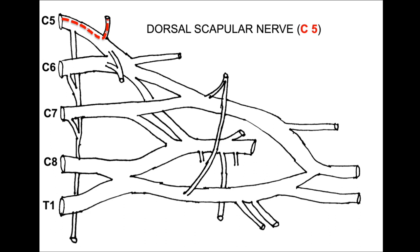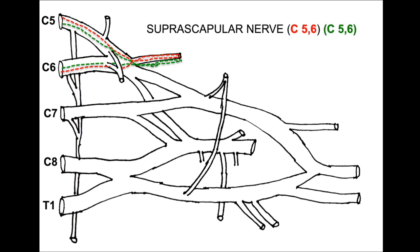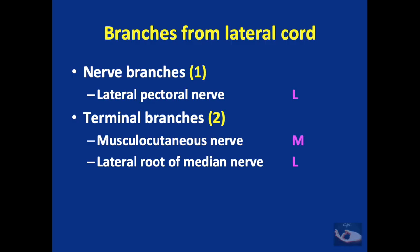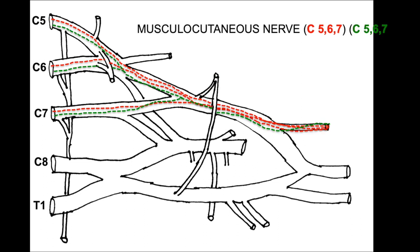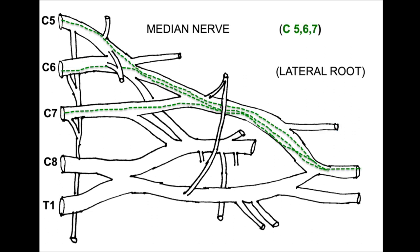The branches from the roots are the dorsal scapular nerve and the long thoracic nerve, which supplies the serratus anterior muscle. From the trunks, only the upper trunk has branches: the suprascapular nerve and the nerve to subclavius. From the lateral cord we have one nerve branch and two terminal branches — the lateral pectoral nerve, the musculocutaneous nerve, and the lateral root of the median nerve. Remember the mnemonic LML. The lateral pectoral nerve receives fibers from C5, C6, C7; the musculocutaneous nerve receives both motor and sensory fibers from C5, C6 and C7; and the lateral root of the median nerve is mainly sensory.